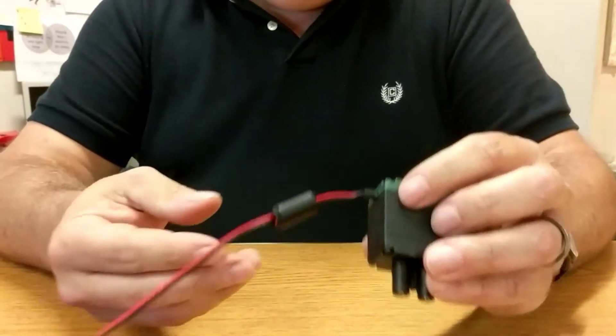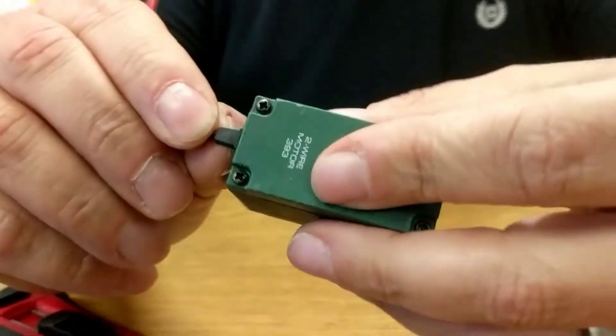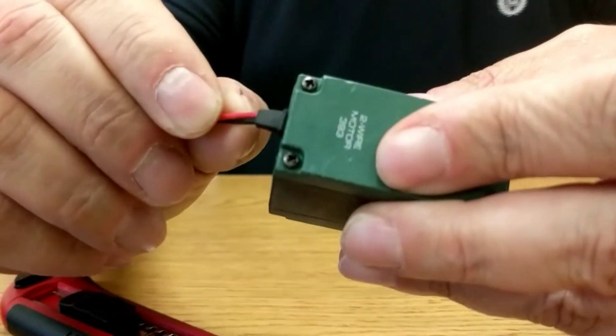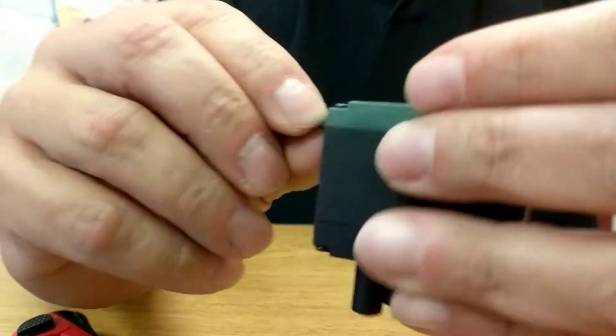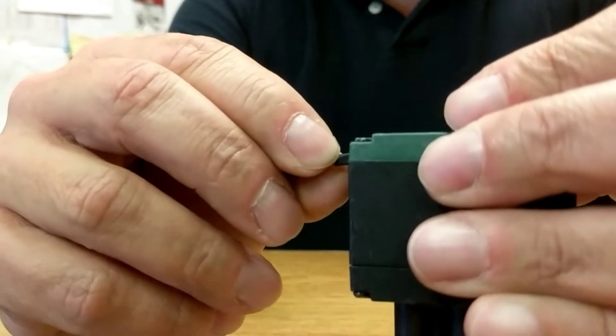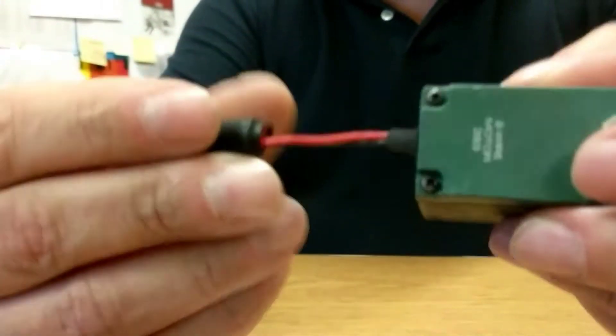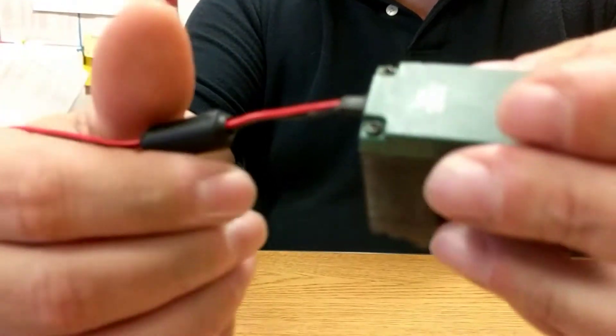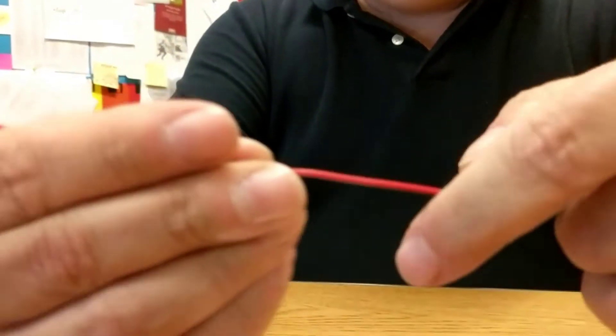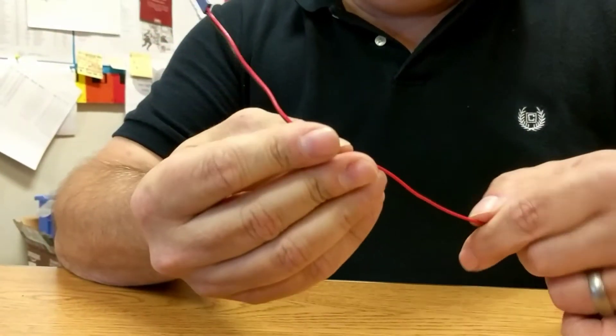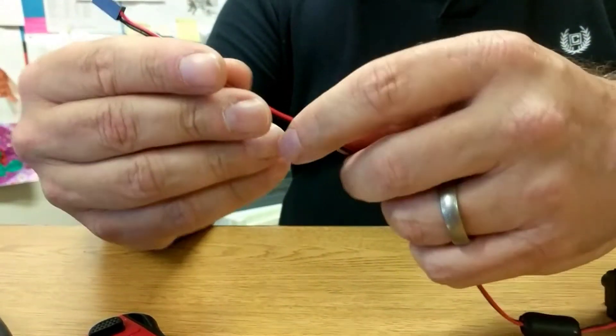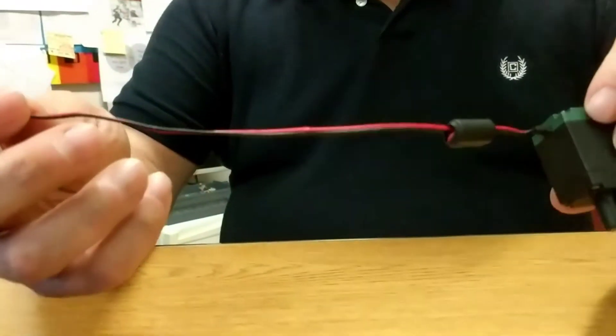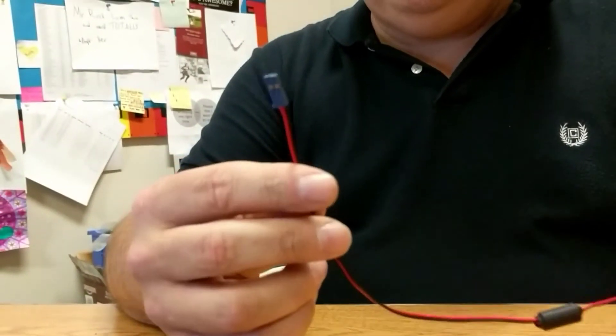First thing you want to do is inspect the wire. The most important thing is to make sure there's no break here at the stress relief. That's actually a pretty common way for these motors to fail. If the stress relief is not intact and you see the copper wires, that means you'll need to do a full wire replacement, which I'll do in another video. You want to inspect the rest of the wire and make sure it's not broken. This wire looks good, so we're just going to replace the pins.